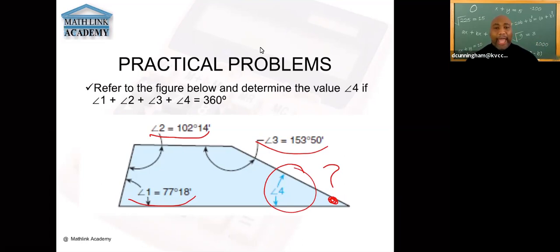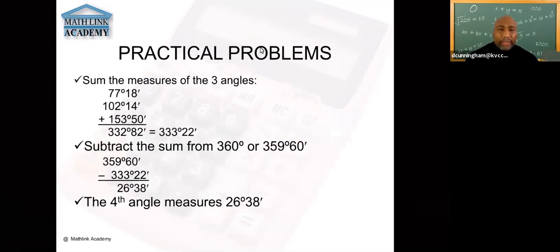So in this particular example, I'll let the slide show you how to do it. So we're going to add up all three angles, and when we add up all three angles we end up with 332 degrees and 82 minutes. Now notice we cannot have 82 minutes, so you're going to have to divide that by 60, and that gives you one time with remainder of 22. So that's why we end up with 333 degrees and 22 minutes. That is our sum of all three angles.